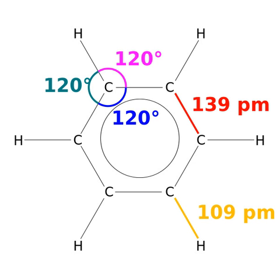Benzene is a natural constituent of crude oil and is one of the elementary petrochemicals. Due to the cyclic continuous pi bond between the carbon atoms, benzene is classed as an aromatic hydrocarbon, the second annulene. It is sometimes abbreviated Ph-H.